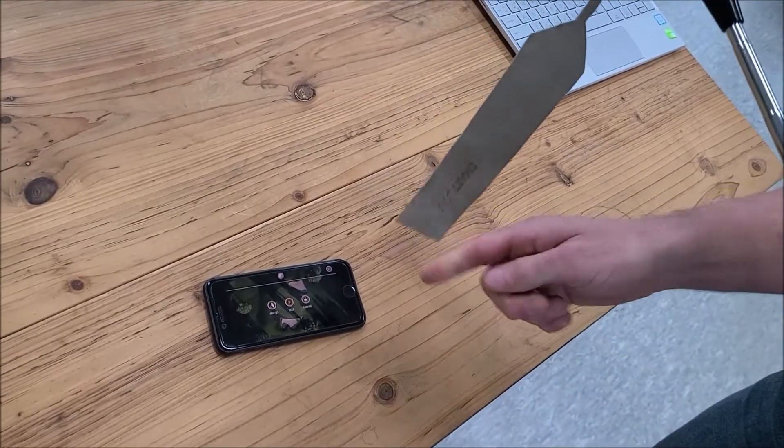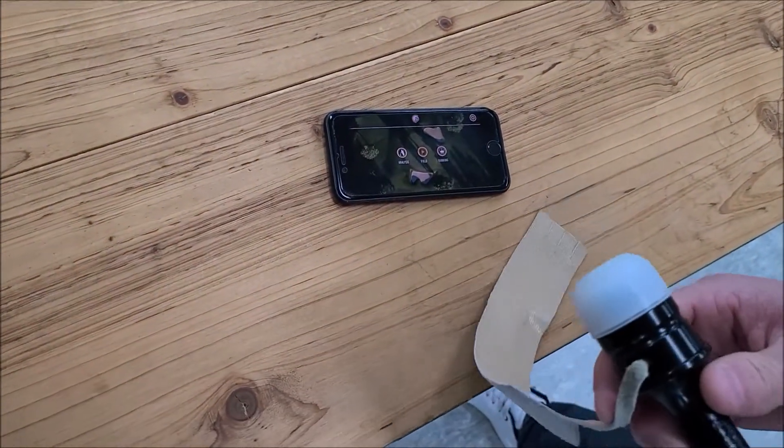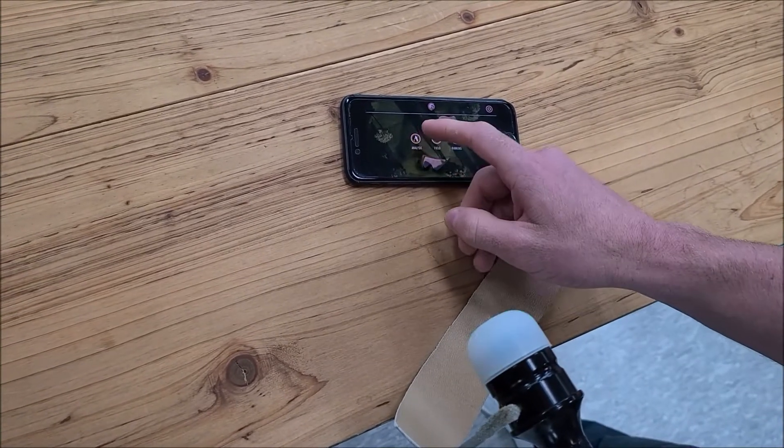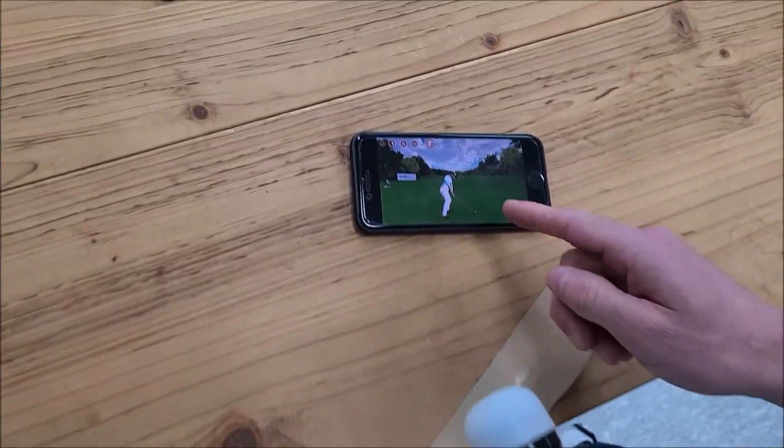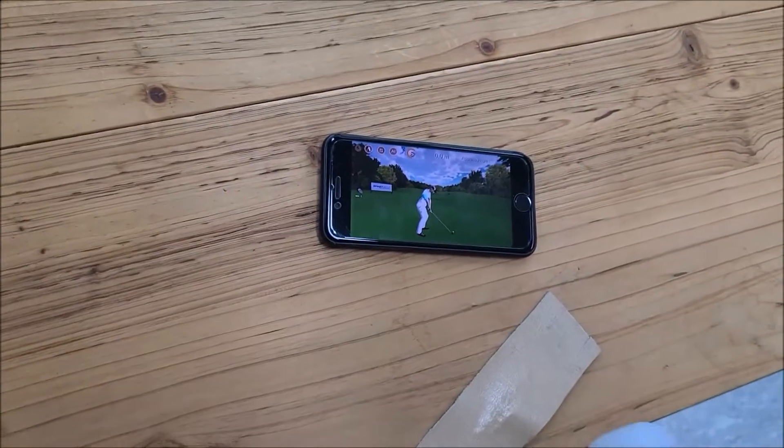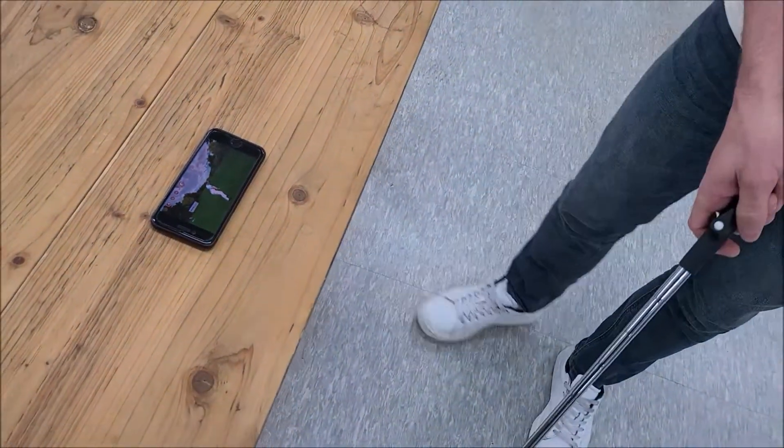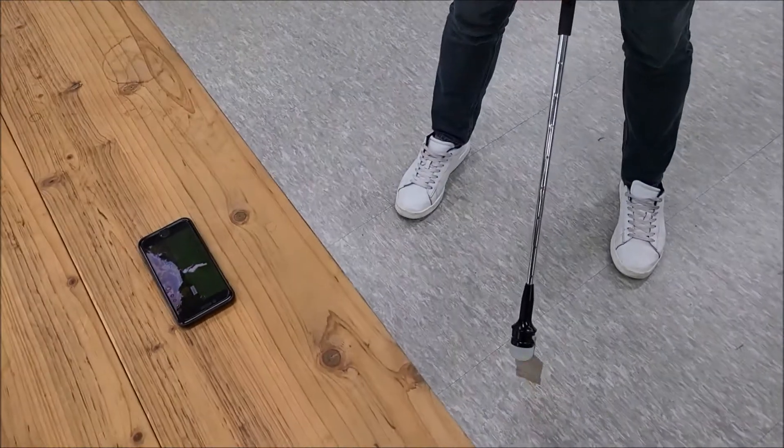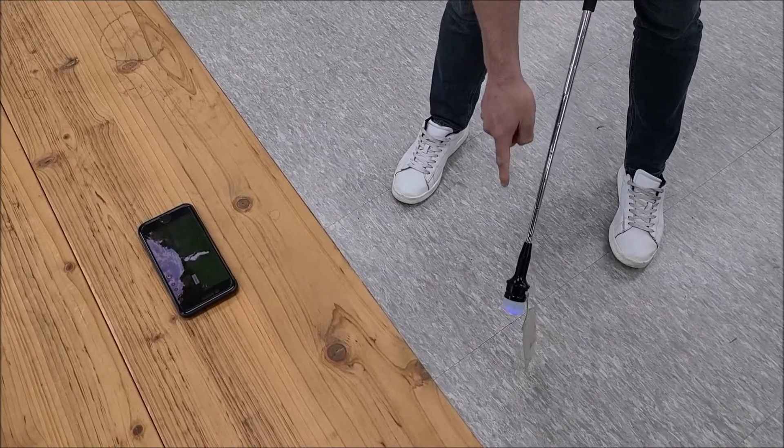Now we can start with the Analysis mode. There we have our avatar. In order to get this to work, I need to press this button on the grip of the club. When I press that, you'll see the red light and then it goes blue, which means I'm ready to swing.